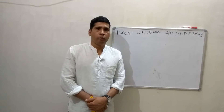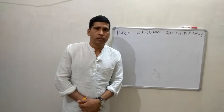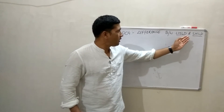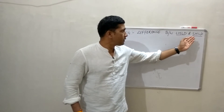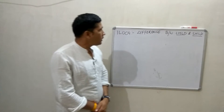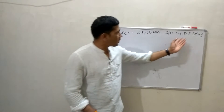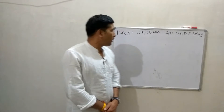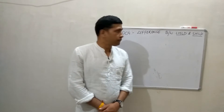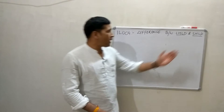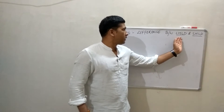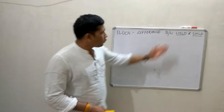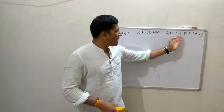Today I am going to discuss two instructions: LHLD and SHLD. Basically these two instructions are mostly used in addition of 16-bit numbers. Now let me explain these two instructions one by one. First one is LHLD.